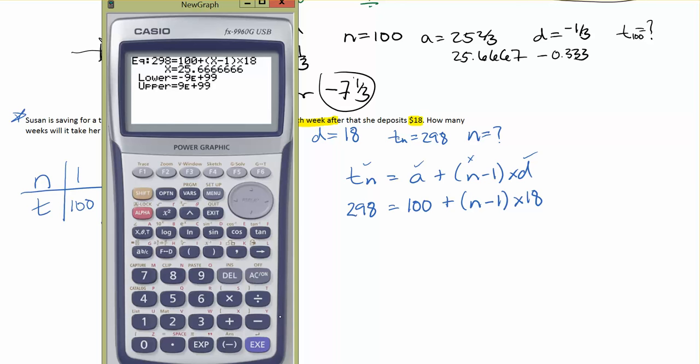So again, N is the thing you don't know, so I'll use the X button there. And don't forget to hit solve. We've got 12.